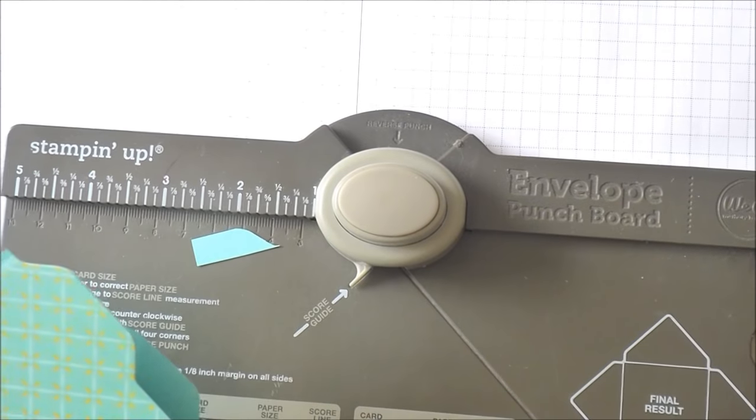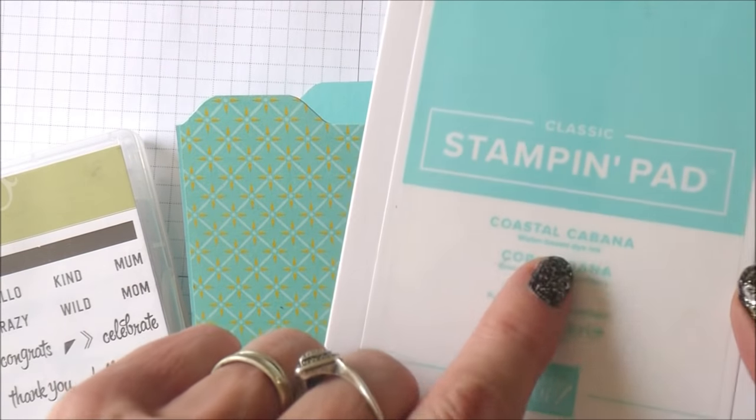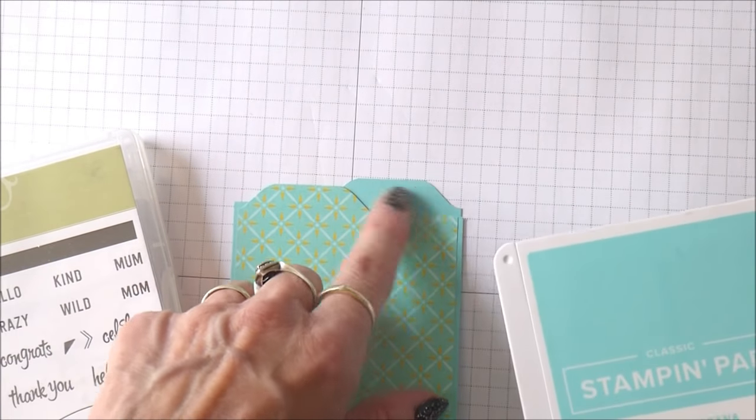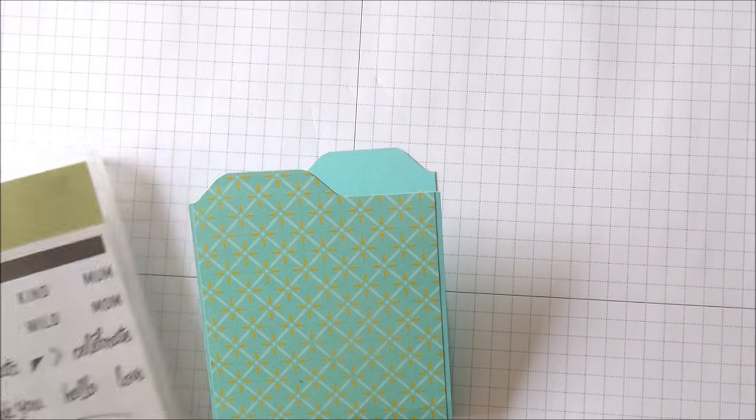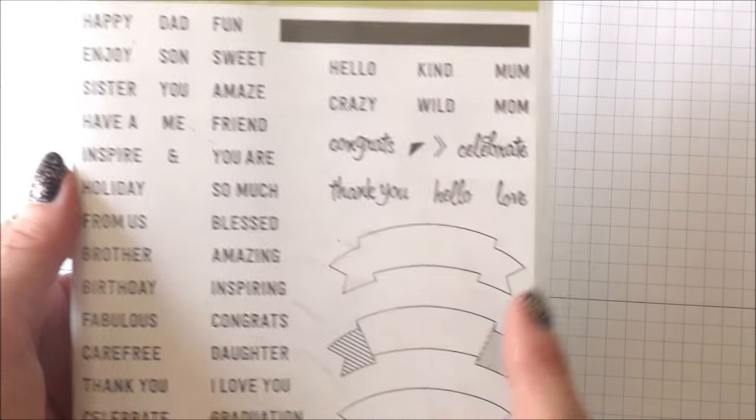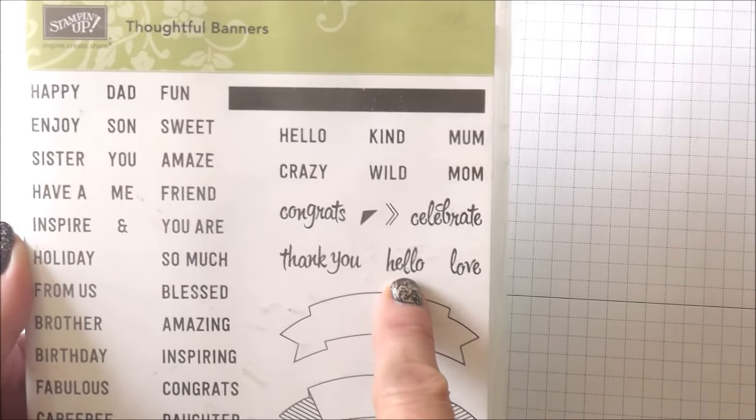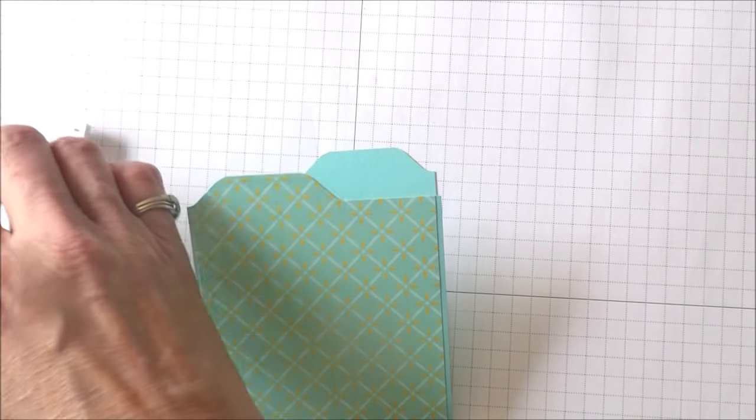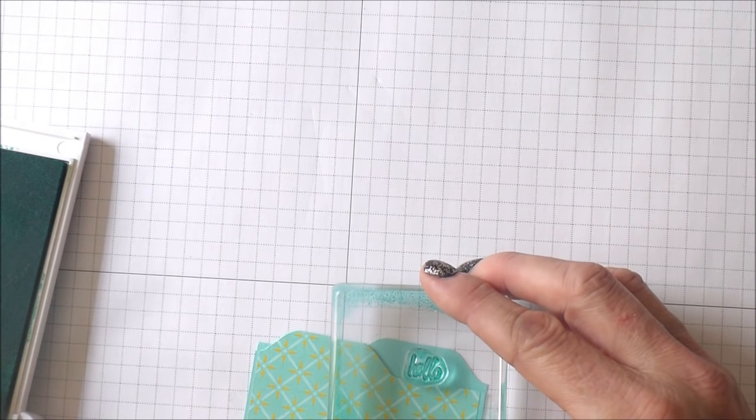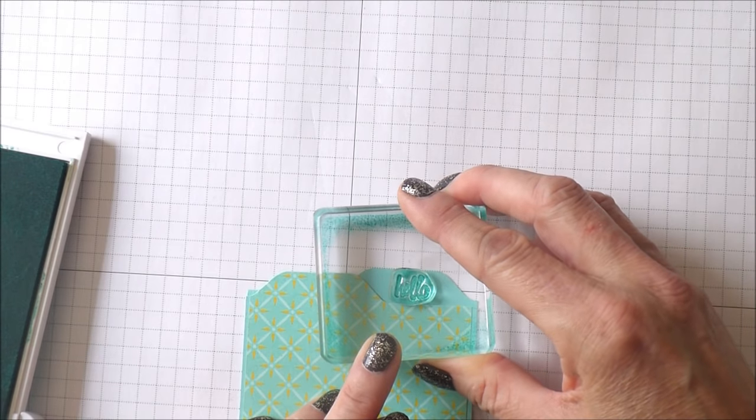Then I want to put a little sentiment here. I'm going to be using Coastal Cabana ink because that will tone beautifully with my cardstock. I'm using the Thoughtful Banners stamp set here - this is a really versatile set with lots of little sentiments or words which really do come in useful. I've just chosen to go with this one which says 'hello'. I'm just going to open my new ink pad, load up the color here, and stamp the word 'hello' around about there like that.